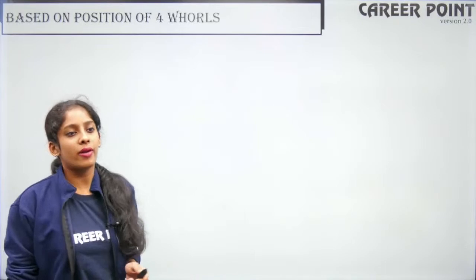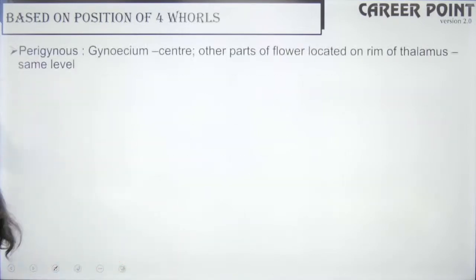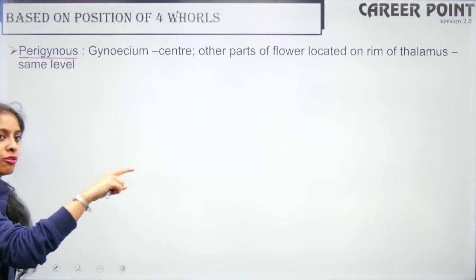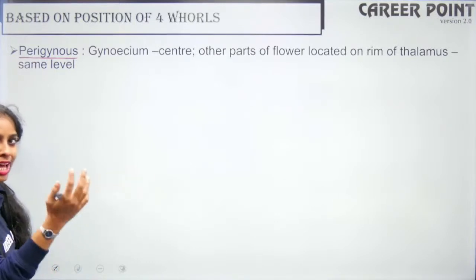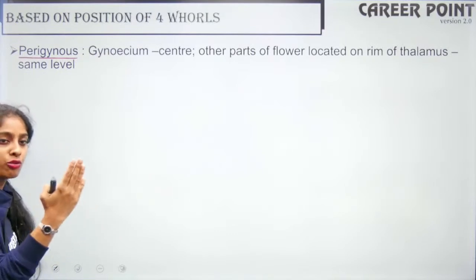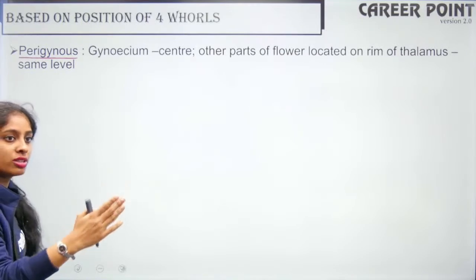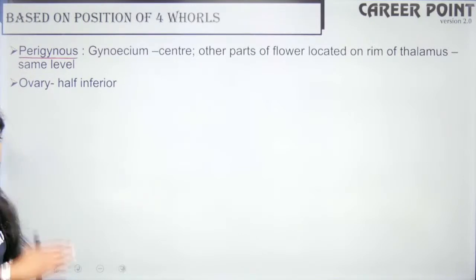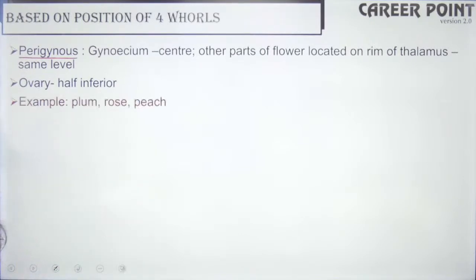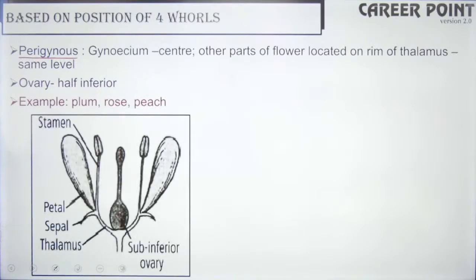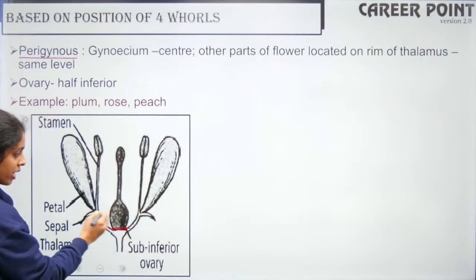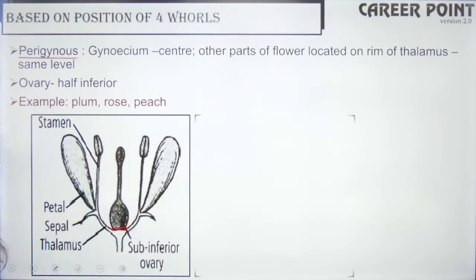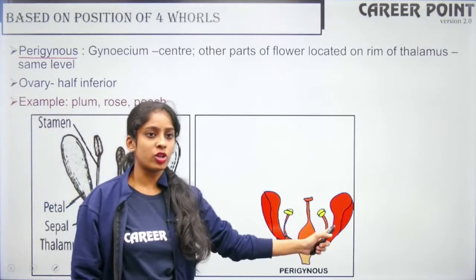The second type is perigynous. Here the gynoecium is at the center and all other parts are located on the rim of the thalamus — the receptacle. The ovary is called half inferior — neither superior nor inferior. Examples: plum, rose, peach.